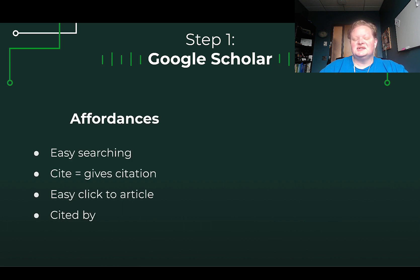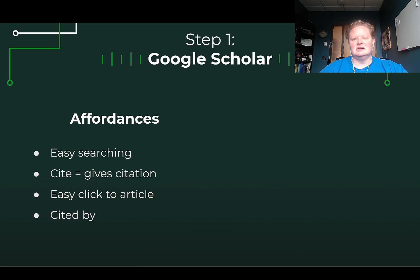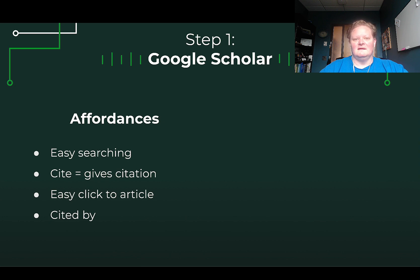Google Scholar's affordances are that it has very easy searching — it works just like regular Google does. The cite button gives you a citation, which is great if you need to make a reference list. They have very easy-to-click articles, and there is also a cited-by function that is really, really helpful.